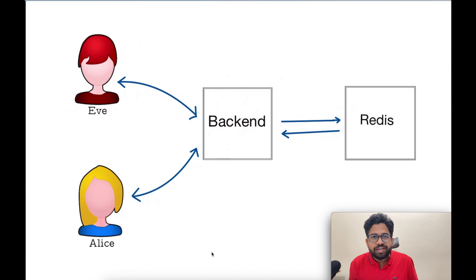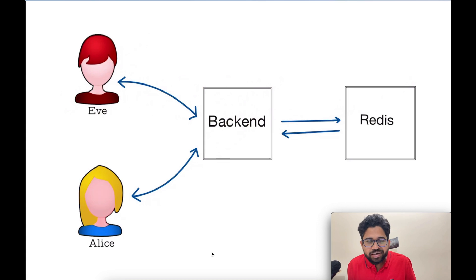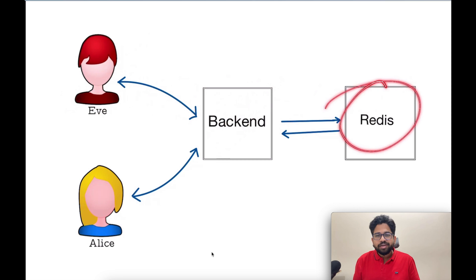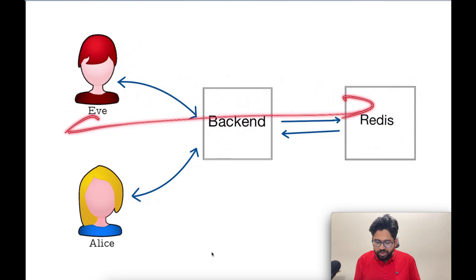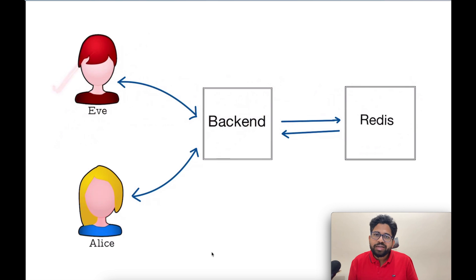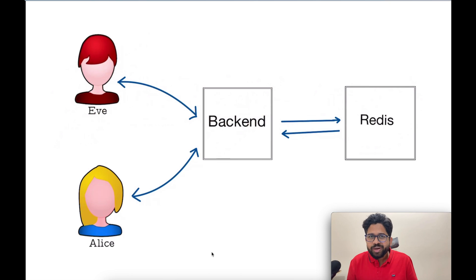The backend will be written in Java and Spring Boot. Using Spring Boot you will have a WebSocket endpoint to which the front end will connect, and then the Spring Boot application will be connected to Redis to publish and subscribe messages. The complete setup will be done on the local machine so you can see how the data is flowing and demo the messaging between two people using the dev console.